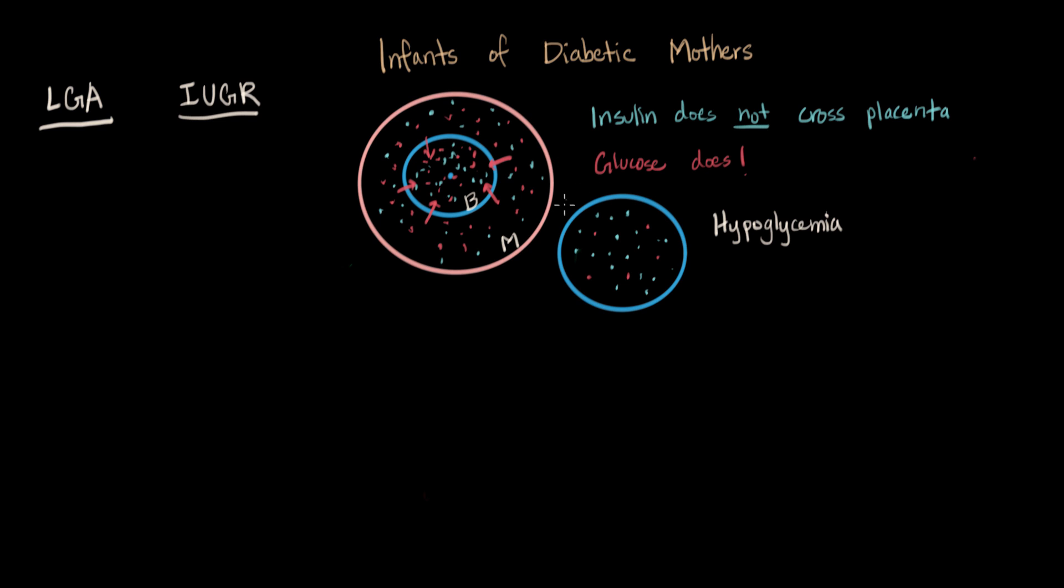Just because the amount of glucose they are receiving from being fed cannot keep up with the high levels of insulin that their body is bathed in already. So the blood sugar can drop really fast with this oversupply of insulin.